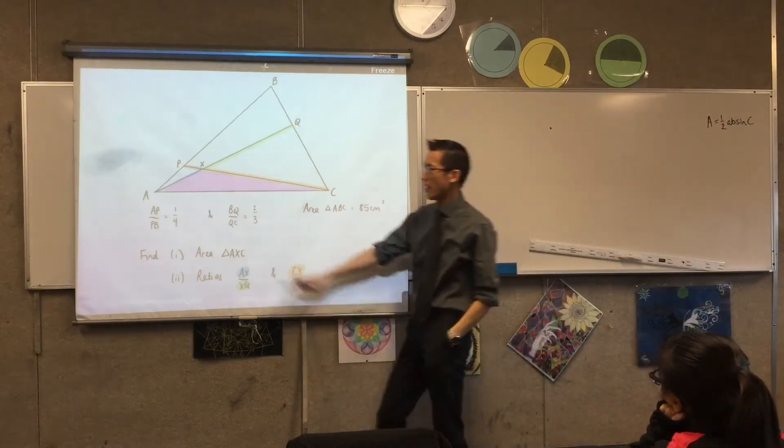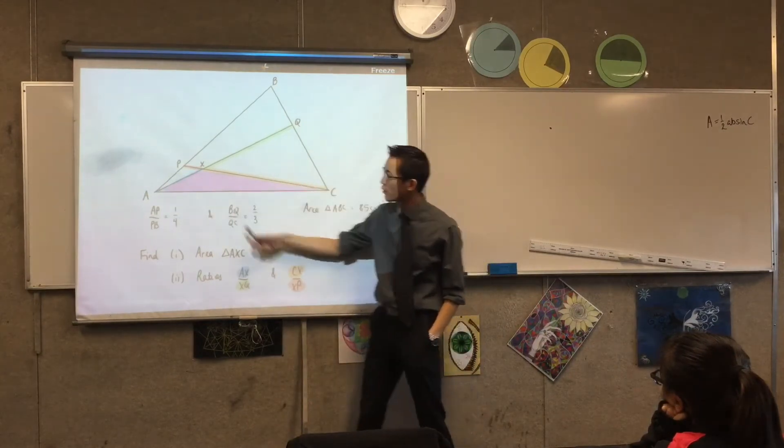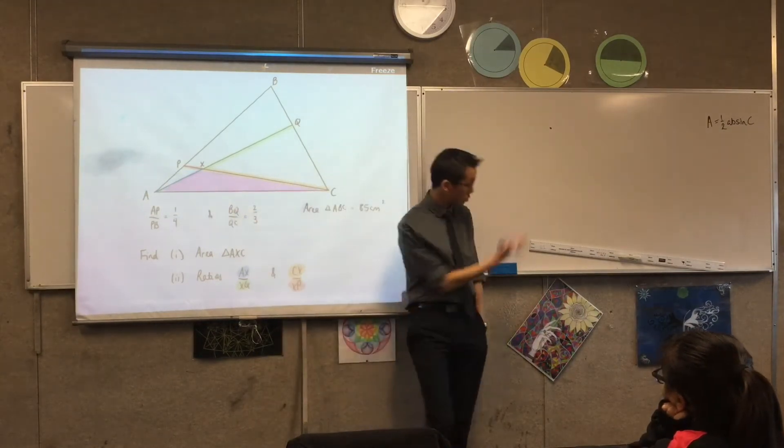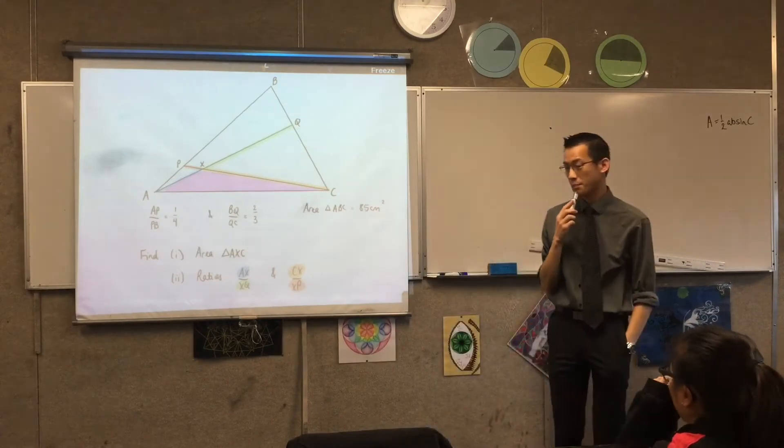Like, for example, if you knew what like AX was, length CX, and if you knew what this angle AXC was, you could use this and you could find out the area, okay?